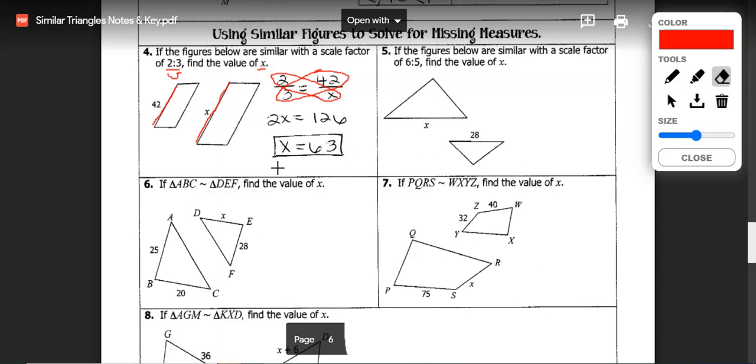I'm going to leave five for you to do in a moment and let's take a look at example six. Here we've been given a similarity statement and told that ABC is congruent to DEF and we're trying to find the value of X. Now they did not give us a scale factor ratio, but that's okay because we have two sides to work with so we can set up one of them using the two known sides.